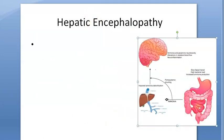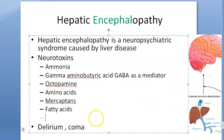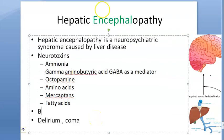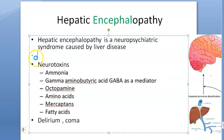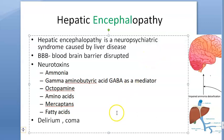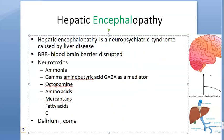What investigations will you do? Clinically you can check an electroencephalogram (EEG). An important additional point: the blood-brain barrier is disrupted, which is why all the toxins reach the brain. These people will also have cerebral edema.